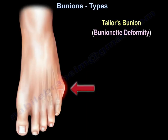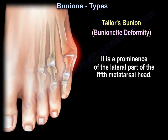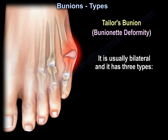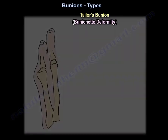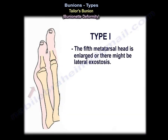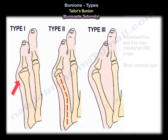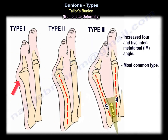Taylor's bunion, or bunionette deformity, is a prominence of the lateral aspect of the fifth metatarsal head. It's more common in females, usually bilateral, and has three types. In type one, the fifth metatarsal head is enlarged or there may be lateral exostosis. Type two involves bowing of the fifth metatarsal. Type three is increased four and five intermetatarsal angle, and this is the most common type.